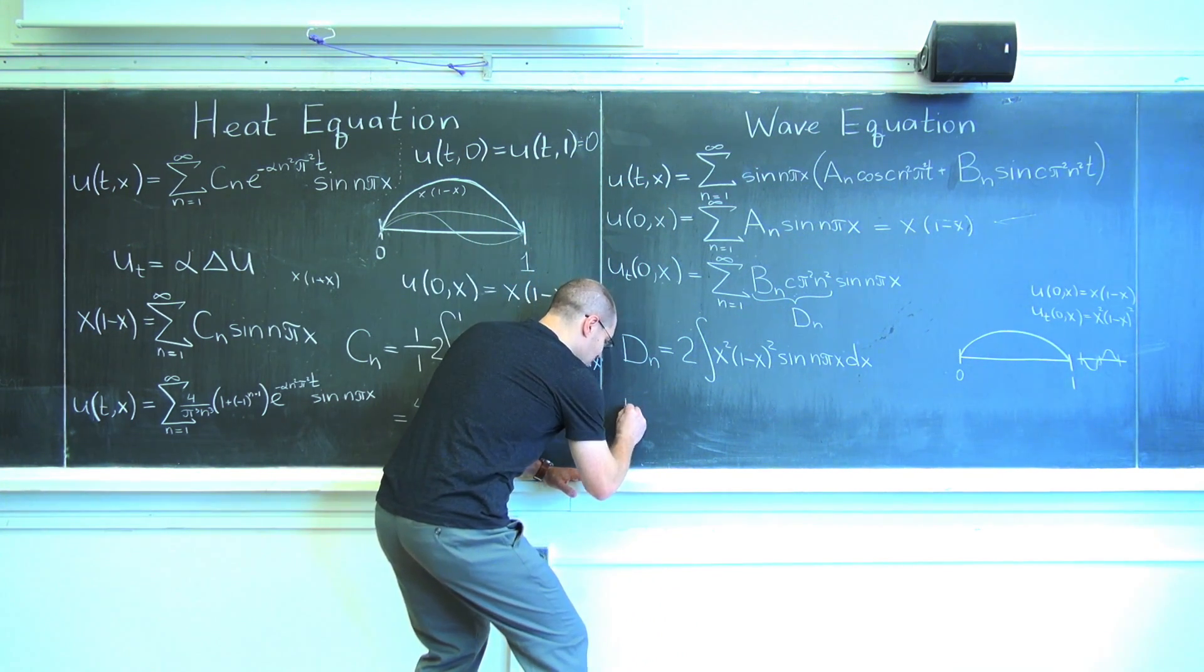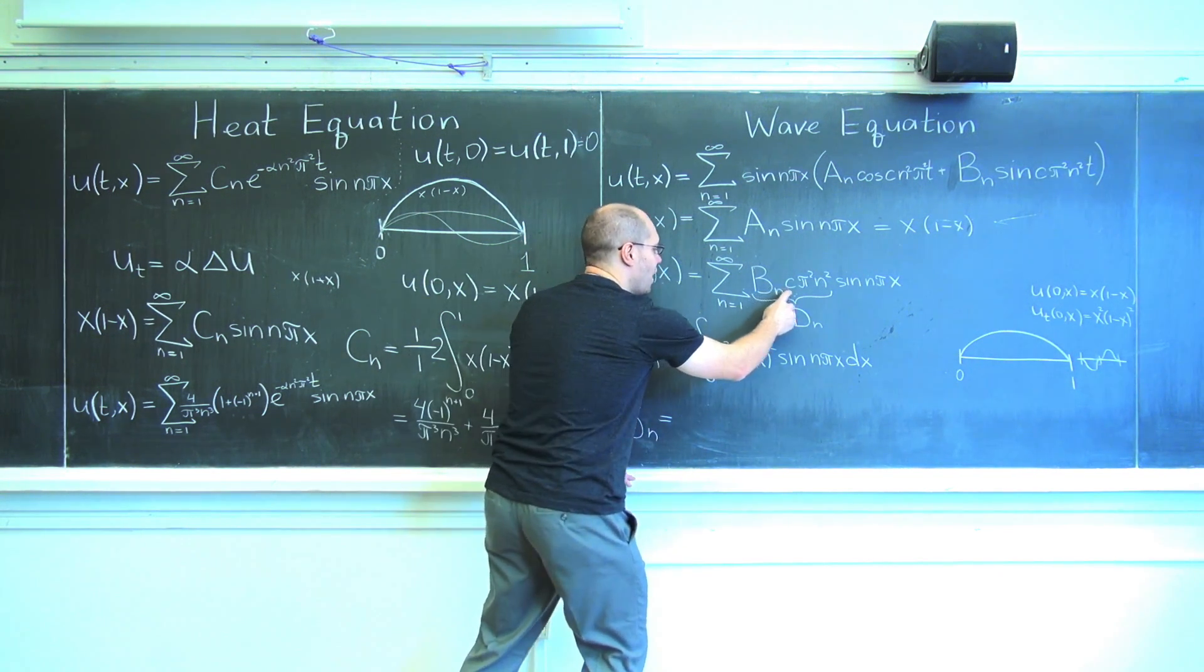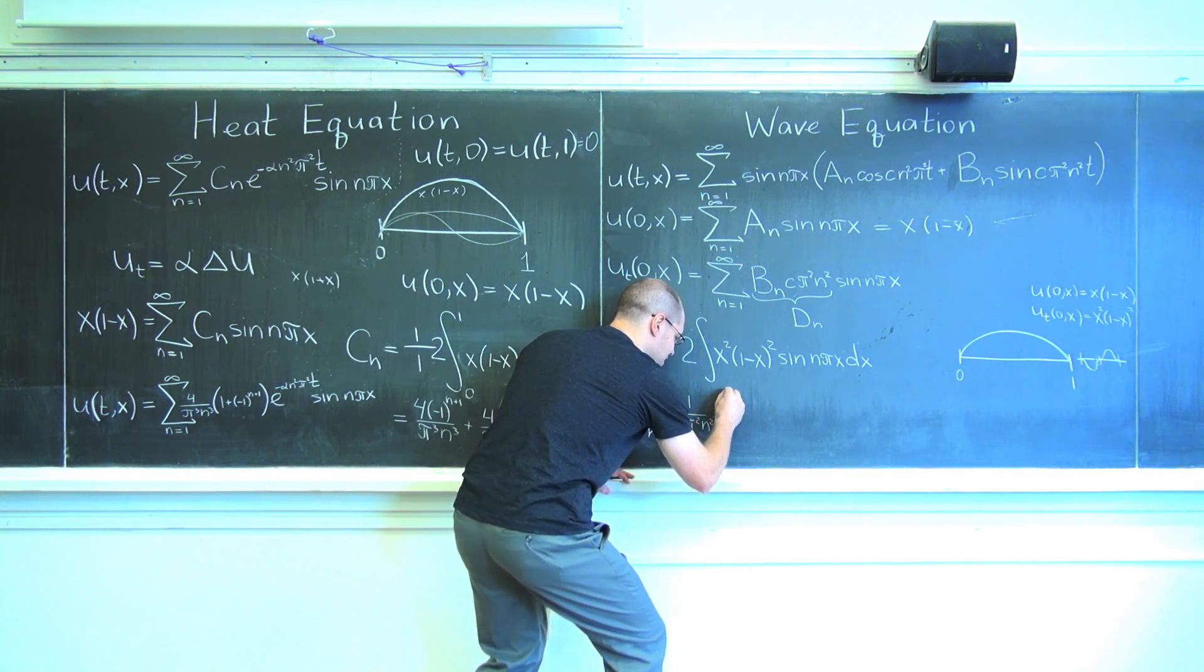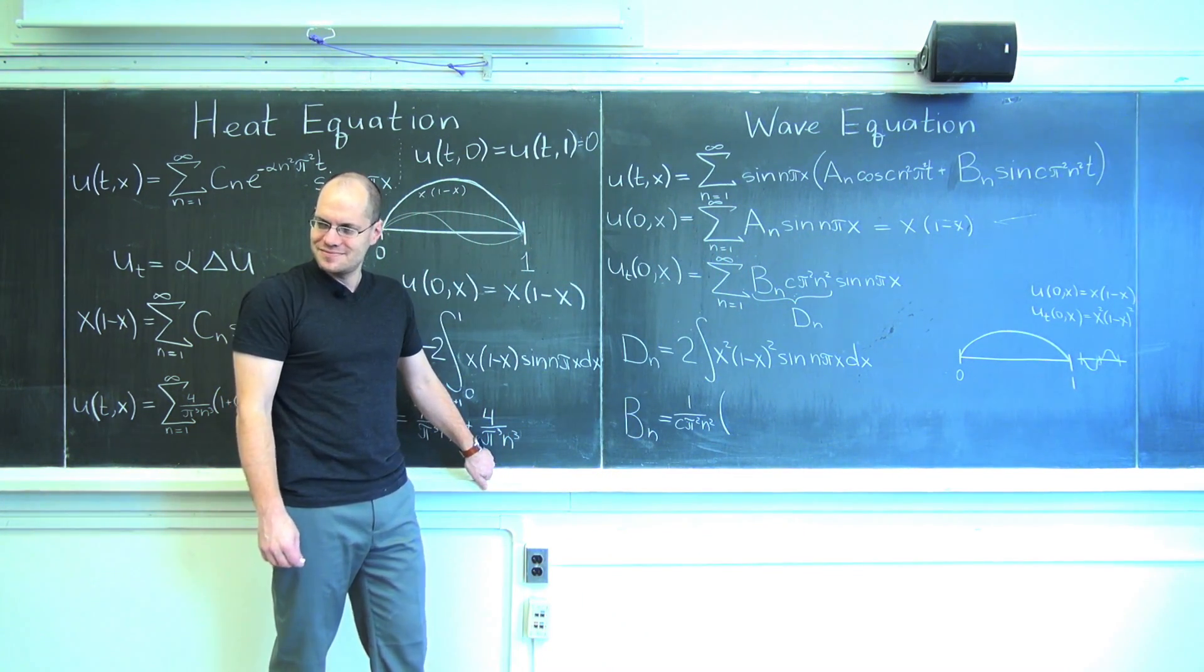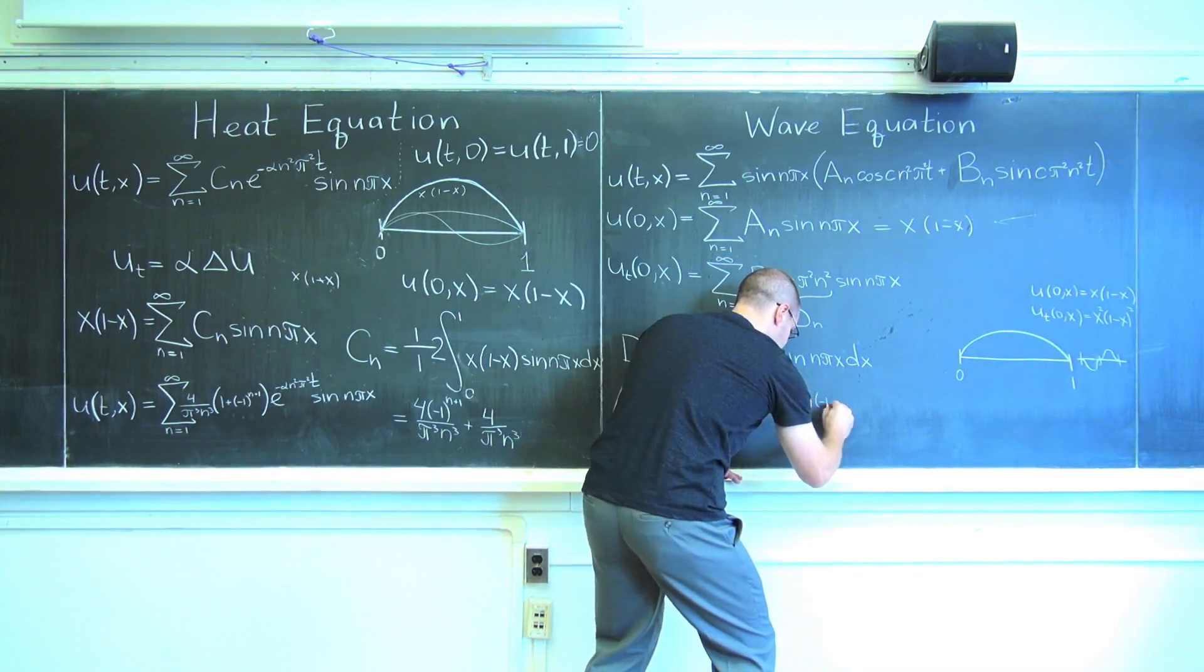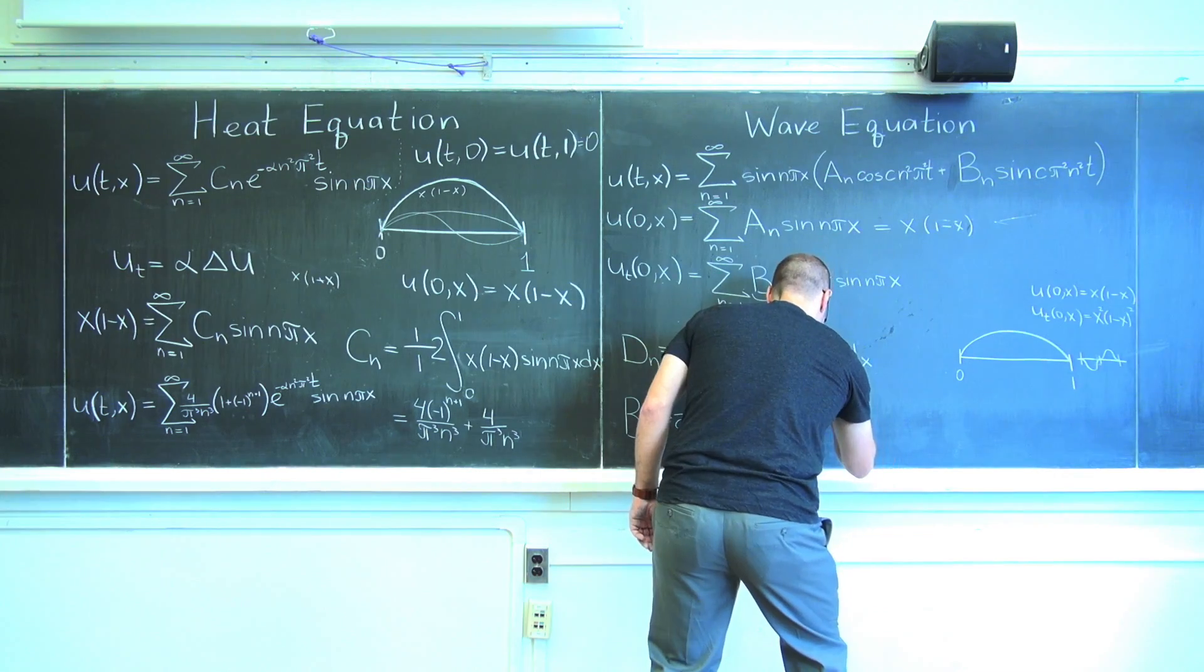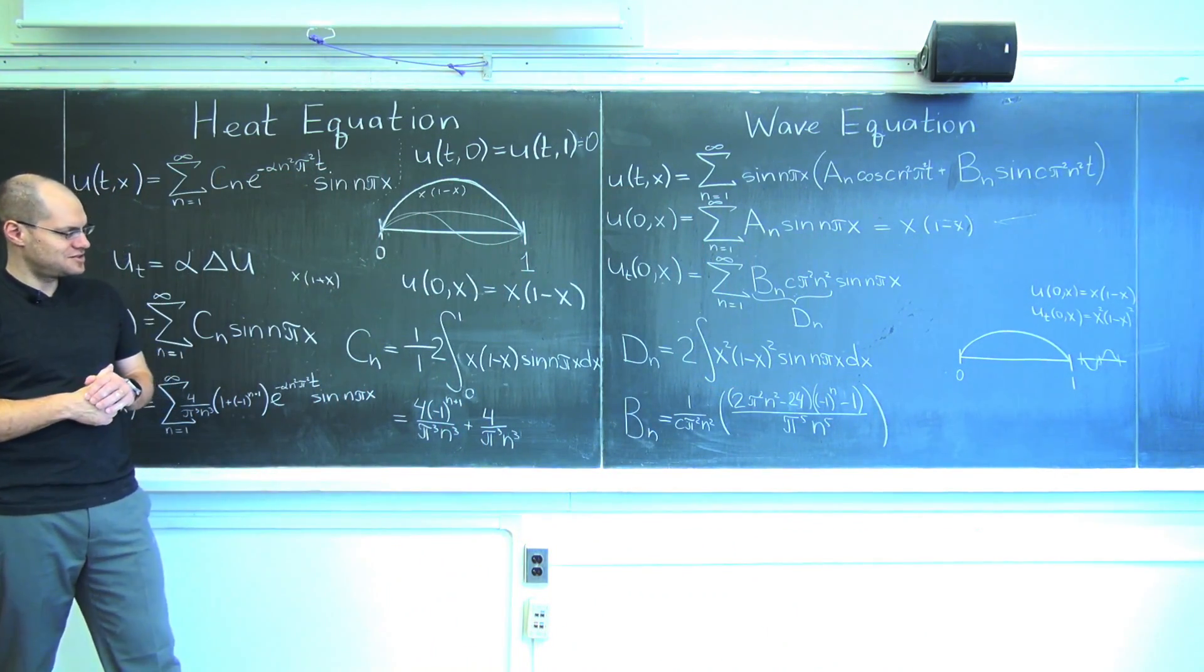So we'll go with, I'll just go straight for b sub n, which will be one over c pi squared n squared, one over c pi squared n squared times—and you're about to tell me what d sub n is. It's not so bad.